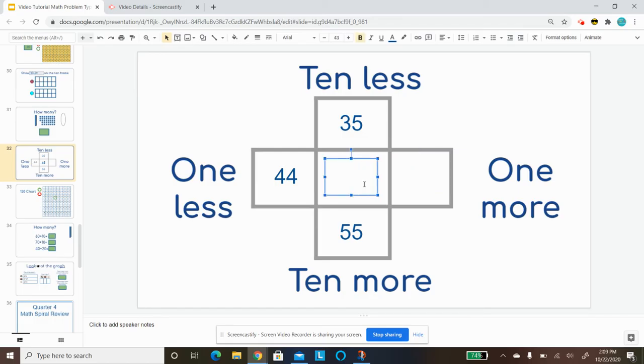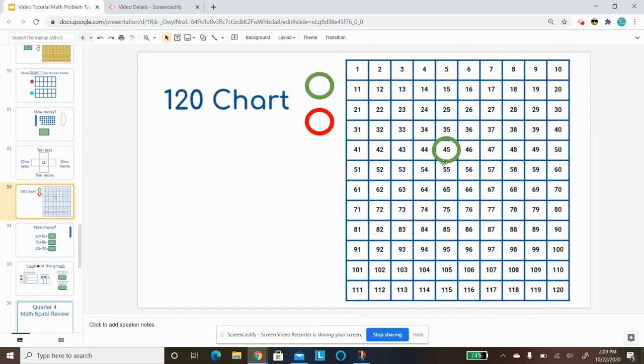Now, let's try it with a different number. Let's say we're doing the number 32. And so I'm going to use my 120 chart again to try to help me figure this out. So first I need to find 32.